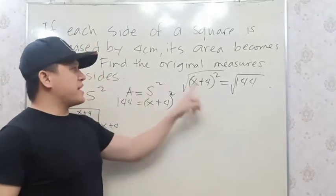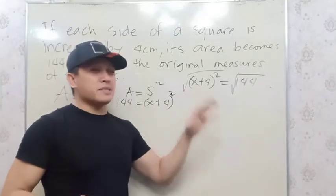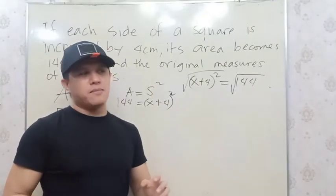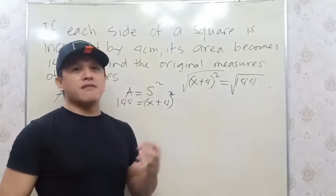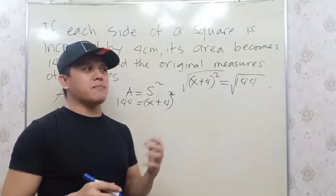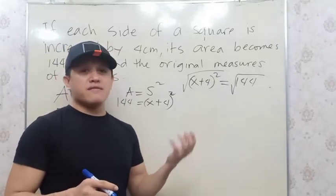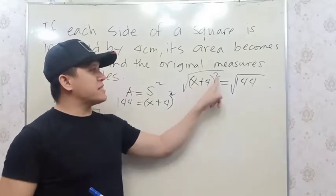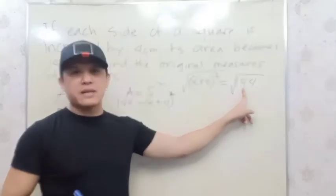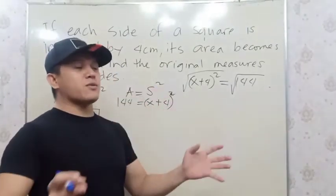Because if you expand this, X + 4 times X + 4, it will just take your time and it takes really long. There's also a big possibility that you'll arrive at the wrong answer. So since this is squared and this is a perfect square number on the other side, just take the square root.